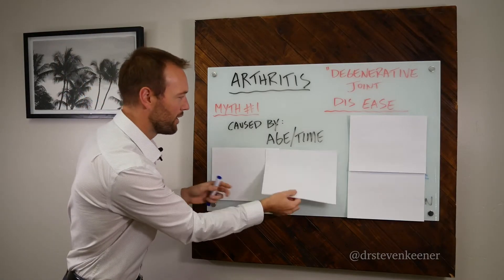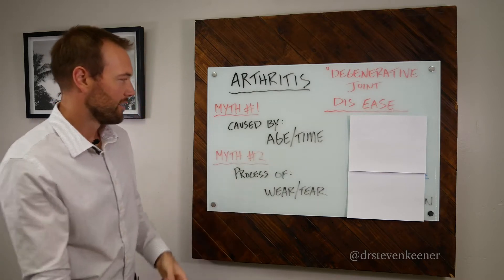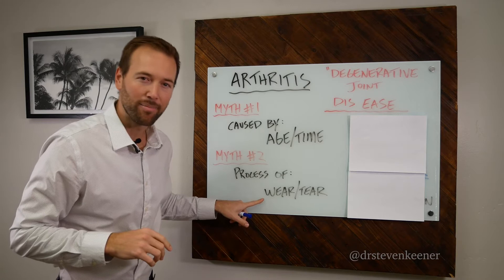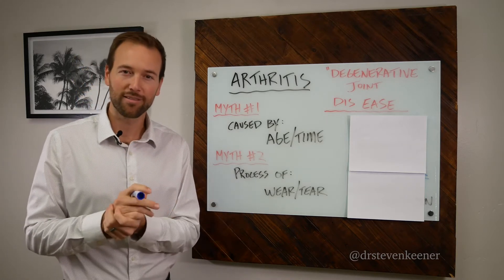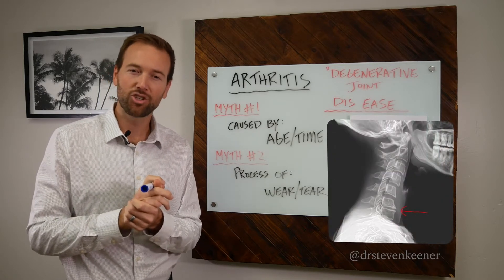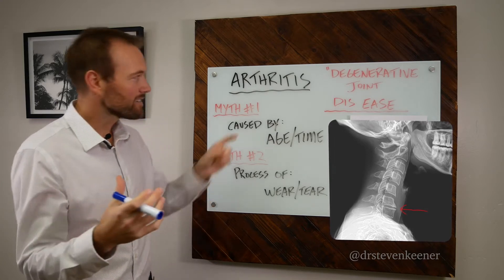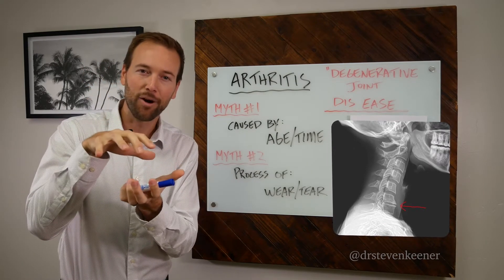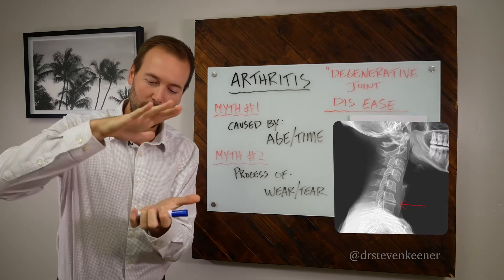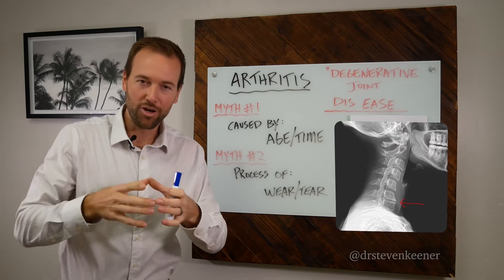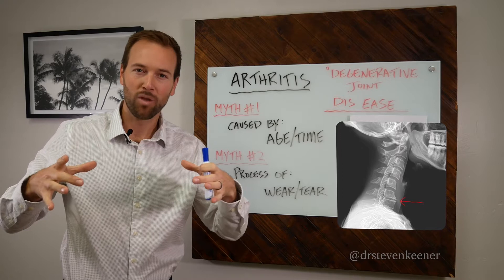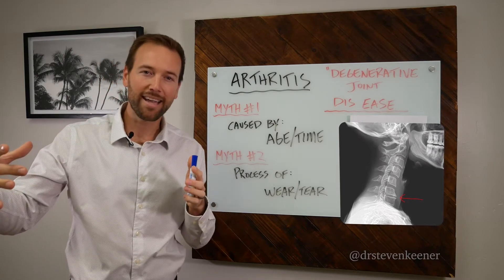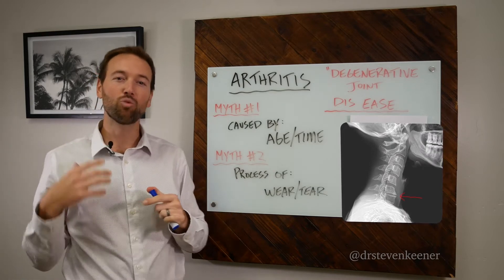Myth number two is that arthritis is wearing and tearing of the joints. This is not very accurate. If you look at the picture on screen, the joint is actually increasing in size — it's not degenerating, it's actually regenerating. Picture it like this: if you take a bit of Play-Doh and form it into a little hamburger patty and push down on it, the circumference actually expands. The same happens with a joint — it gets bigger. And what that indicates is that the body isn't wearing and tearing; the body is actually regrowing tissue.